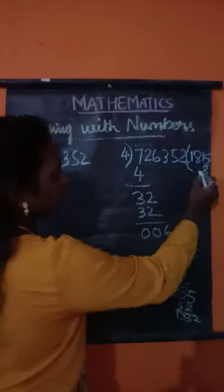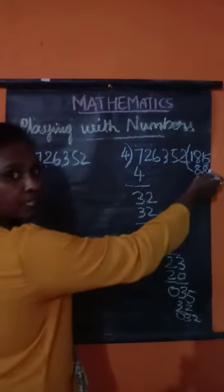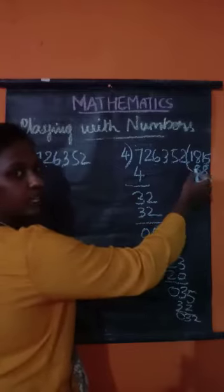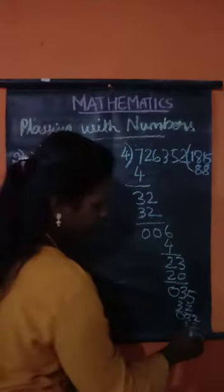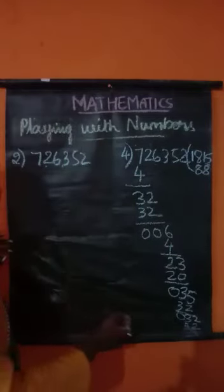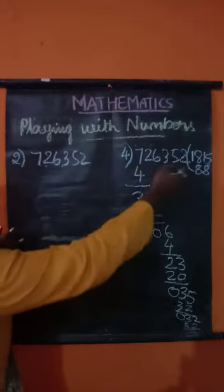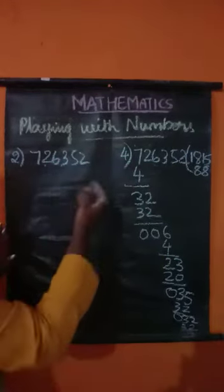We know again 4 eights are 32. 8 will come in this place. I have written here because both the numbers are 8. 4 eights are 32, so 0. In final we can conclude that we did not get any remainder. So 726,352 is divisible by 4. Let us divide by 8.